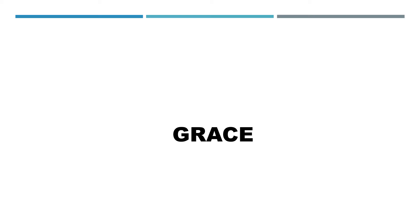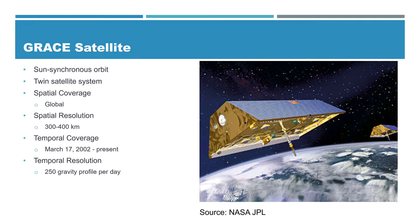Welcome to this lecture. We'll be talking about GRACE, a satellite that measures water storage. It's a sun-synchronous orbit with a twin satellite system and covers the entire globe. The spatial resolution is pretty coarse, from 300 to 400 kilometers.